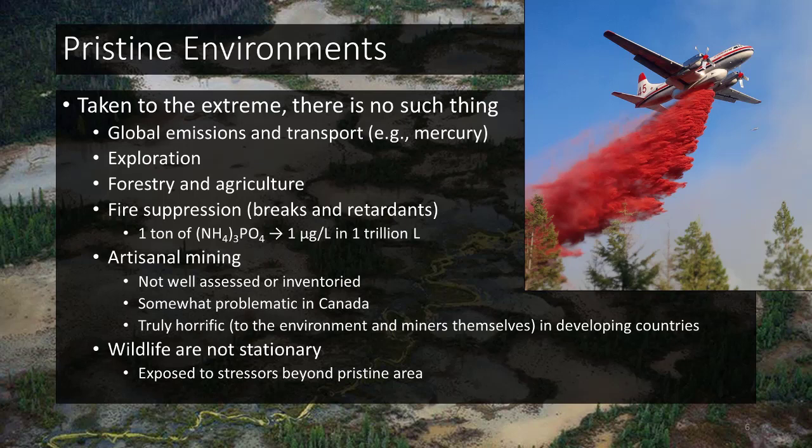Really, there is no such thing as a purely pristine environment. You can measure mercury at the top of glaciers in the high Arctic. If you're doing a baseline somewhere, chances are great that geologists have already been out there exploring and disturbing the land just by being there measuring its potential. So exploration can mess up your pristine environment. Forestry and agriculture are almost everywhere, and fire suppression is another interesting factor.